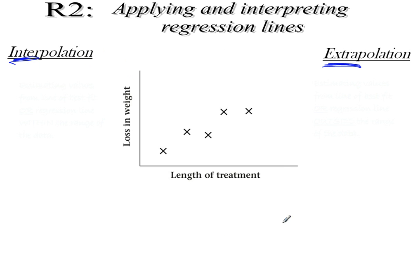If you take a look at this example here, we've got a relationship, it looks like a positive correlation, between the length of treatment and loss in weight. So maybe this is a trial for a weight loss drug. Let's put a straight line in there. Now note that I've drawn the line and I've extended it beyond the end of my data.